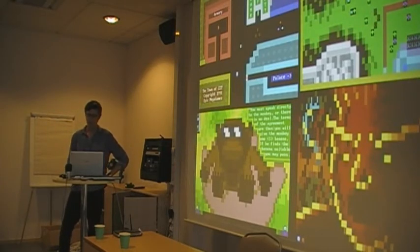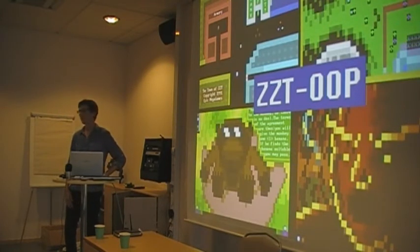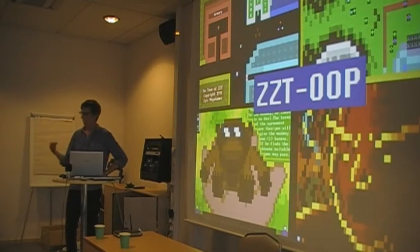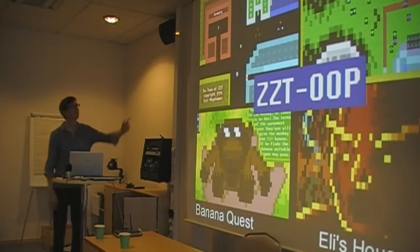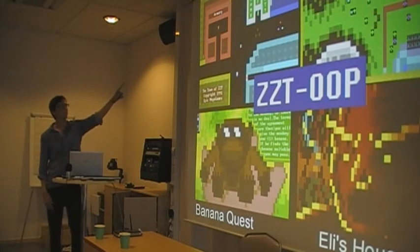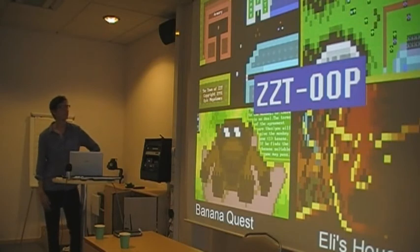The thing you could do with ZZT was not only use the built-in mechanics to build your game worlds, but also use this game programming language called ZZT-OOP, which stands for Object Oriented Programming. It's not in the sense of C++ or anything — it's more that you could use objects on the screen and script them. These games shown here range from the first game released in 1991, up to Eli's House from around 2008.